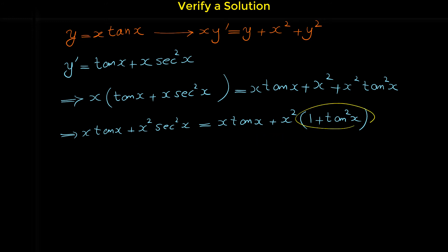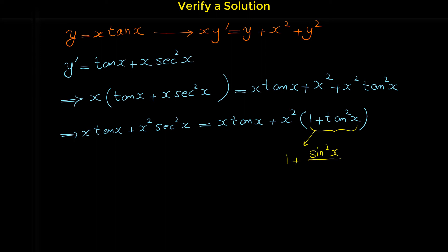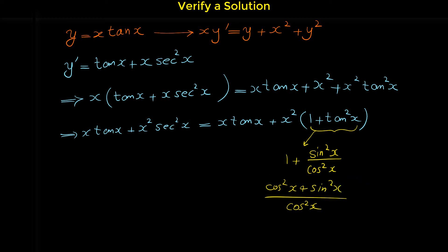In case you don't know why 1 plus tangent squared x equals secant squared x: tangent squared x is sine squared over cosine squared. Adding 1 gives a common denominator of cosine squared, with numerator cosine squared plus sine squared, which equals 1. So the result is 1 over cosine squared x, which is secant squared x.